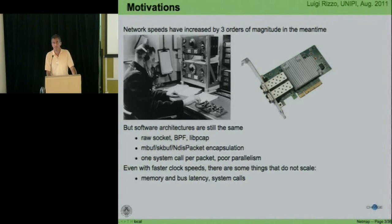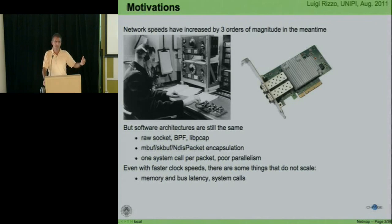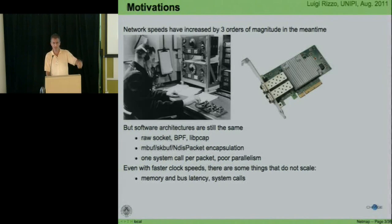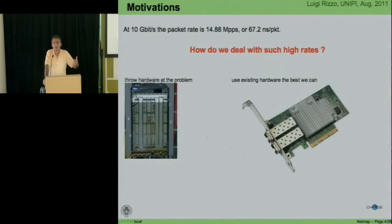CPUs have become faster over the past 30 years, but there are some things that do not scale. Long ago it was possible to access a memory location in one clock cycle. Now you can only do that for registers or first-level cache, not on main memory. At 10 gigabit, we have about 14.88 million packets per second — one every 60-something nanoseconds. So how do we deal with this?